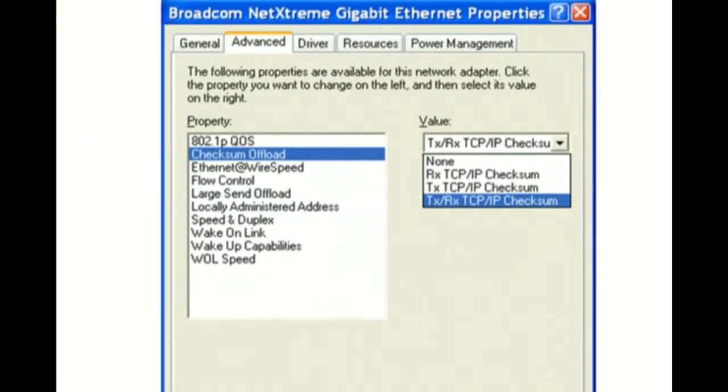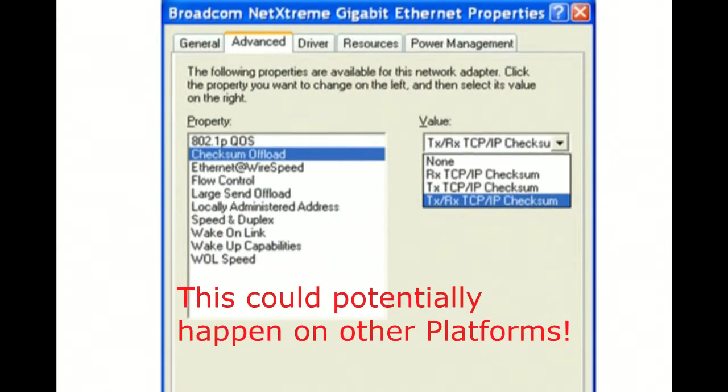Everyone beat a path to this particular door. All the network interface card manufacturers started performing TCP checksum offloading in the actual NIC hardware. What we found was any NIC in a Windows 2000 machine, a Windows 2000 server, that had TCP checksum receive and transmit enabled, those were the perpetrators of the bad TCP checksums.